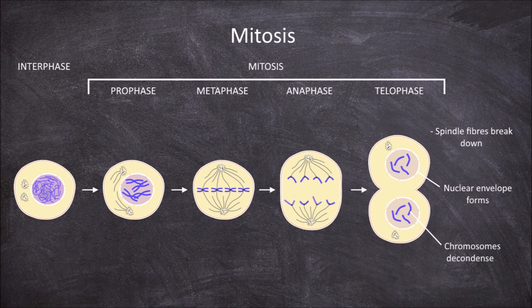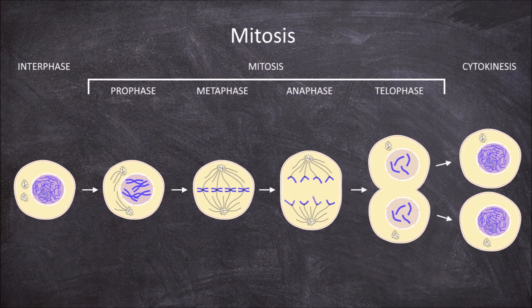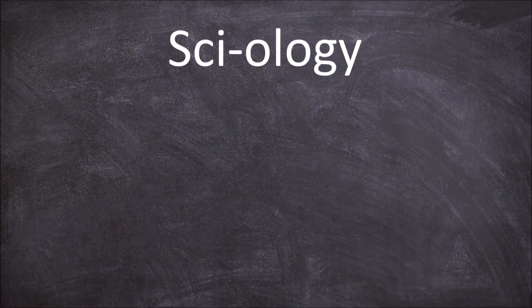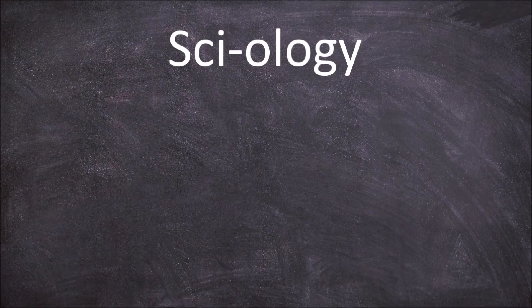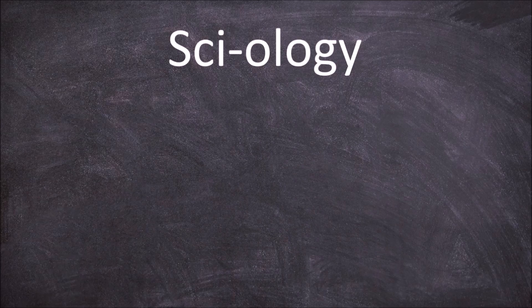Another process known as cytokinesis occurs at the same time as the end of telophase. This is where division of the cytoplasm occurs, creating two daughter cells each containing one of these DNA containing nuclear envelopes.